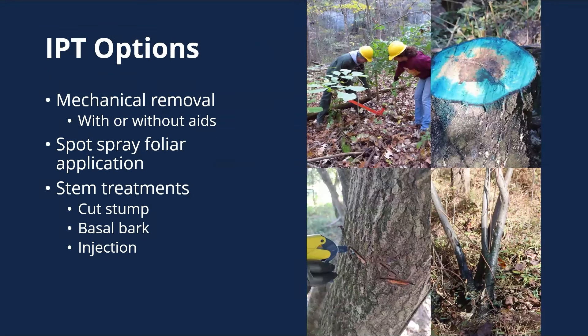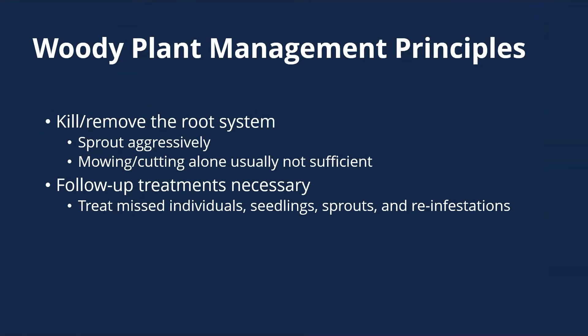Our options are mechanical removal with or without aids, spot spray foliar application where you're treating the foliage of an individual plant, or stem treatments including cut stump, basal bark, and injection. The key principle when looking at woody plant management is that since these plants tend to sprout very aggressively, your goal is to kill or remove the root system — render it unable to sprout. Mowing or cutting alone is usually not sufficient. Follow-up treatment is often necessary, as you'll miss some individuals, encounter seedlings, or get re-infestations from adjacent lands.